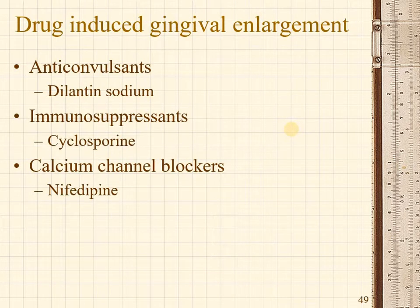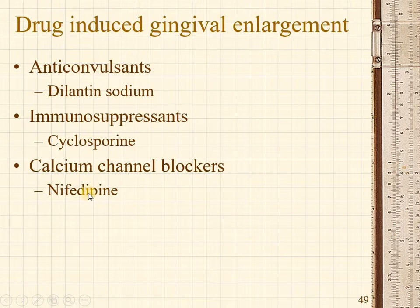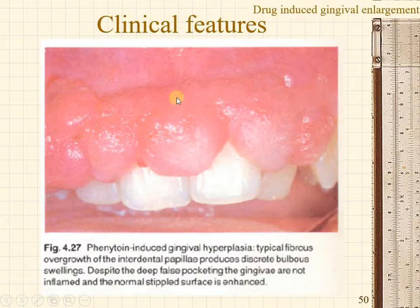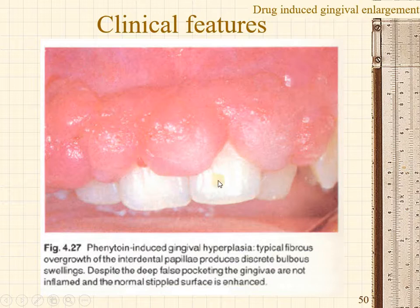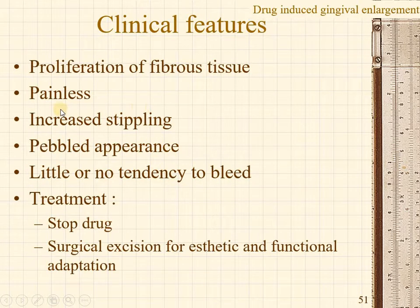There are many medications which cause growth of the fibroblasts leading to gingival enlargement. These groups of drugs mainly include anti-epileptic or anti-convulsant drugs like dilantin sodium, immunosuppressants like cyclosporine, and calcium channel blockers like nifedipine, nitrindepine, etc. The characteristic of drug-induced gingival enlargement is accentuation of the stippling. Gingival surfaces show a pebbled appearance. Most of the time, there is a nodular enlargement of the gingiva. The proliferation is usually painless and fleshy with proliferation of the fibrous tissue.